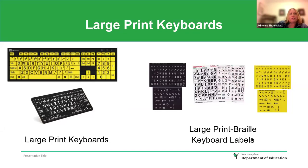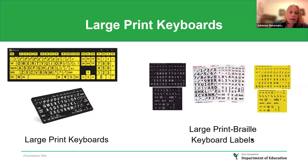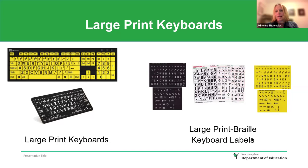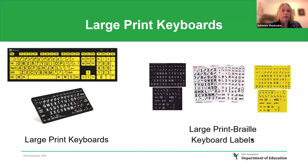Large print keyboards come in various configurations. There's a large keyboard with a numpad attached, one with a yellow background and black letters, and a smaller one with a black background and white letters. It's important to determine what a student sees best. You can buy an external or Bluetooth keyboard, or modify an existing keyboard using stickers — available in black-on-white, white-on-black, or yellow-on-black — to place over whatever keyboard the student already uses.